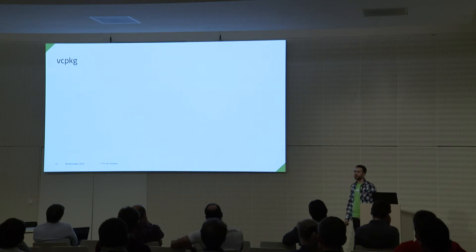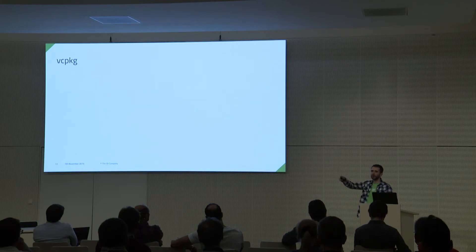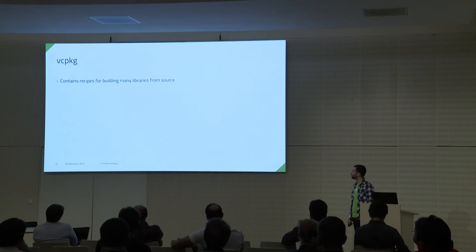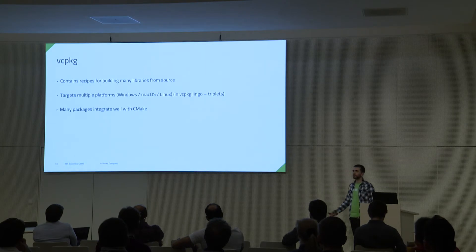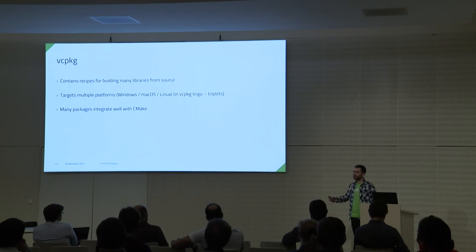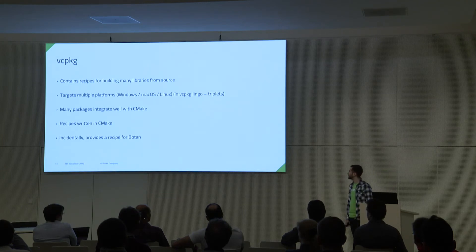vcpkg is a tool provided by Microsoft for basically building libraries from source and using them in your projects. It's more of a build-from-source package manager rather than downloading pre-built binaries. It has recipes for over 1,000 packages and supports Windows, Mac, and Linux. The recipes — the instructions on how to build the packages — are written with CMake script, so if you're familiar with CMake you can figure out how to write or read recipes. And by the way, it provides a recipe for Botan, so let's use it.